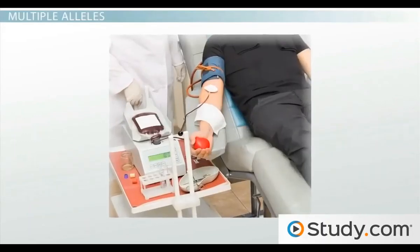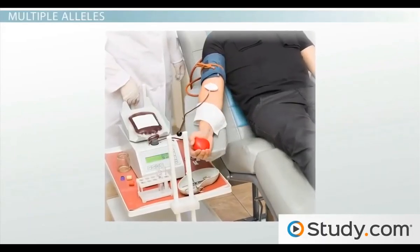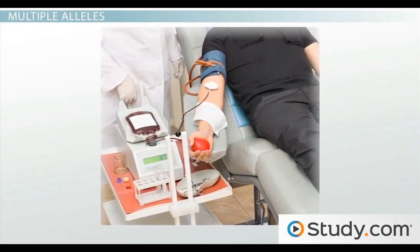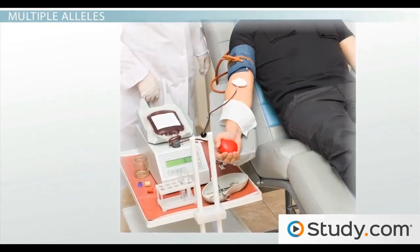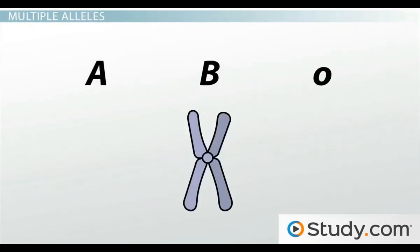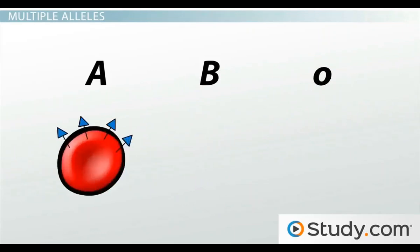Have you ever wondered what your blood type means or why you can only receive blood from certain people? Well, it's a more complex trait than we've been considering so far. For starters, there's more than one allele. There are multiple alleles for this gene. One allele is called the A allele and it helps produce a sugar that's found on the outside of red blood cells.